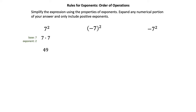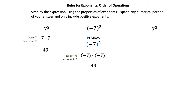In the second example we have a set of parentheses around negative 7, raised to a power of 2. Recall your order of operations — parentheses is the first operation. Everything inside the parentheses is raised to that power of 2, so we have a base of negative 7 and an exponent of 2. Negative 7 times negative 7 is positive 49.